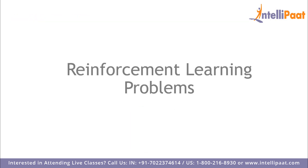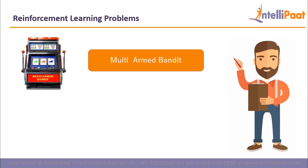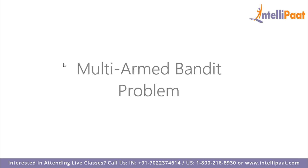Now let's discuss problems we can solve using reinforcement learning. The first type is called multi-armed bandit problems, which require sequential decision making. We'll also discuss Markov decision processes, which are used for making decisions under uncertainty, and we'll see how MDPs differ from multi-armed bandit problems, along with the techniques used to solve them.